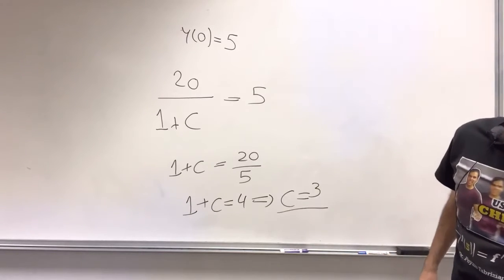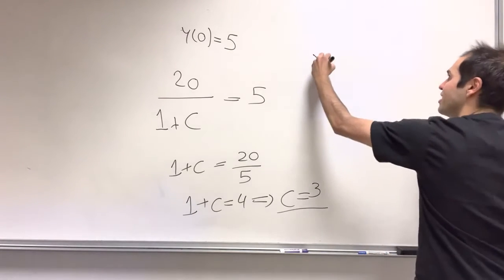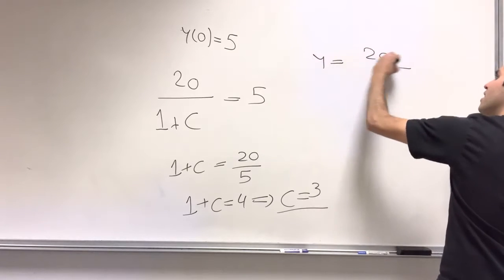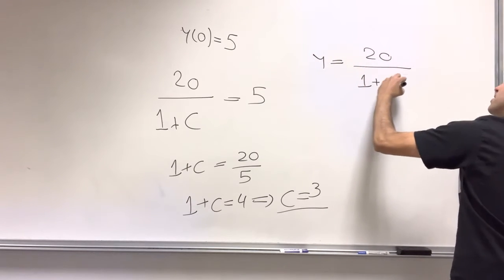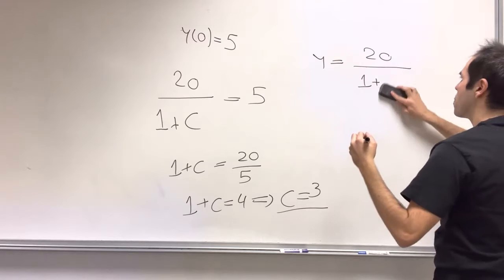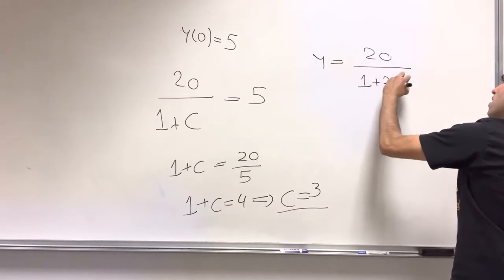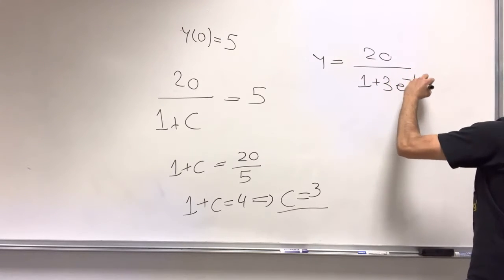And therefore, what is the general solution? y is 20 over 1 plus 3 e to the minus t over 10.